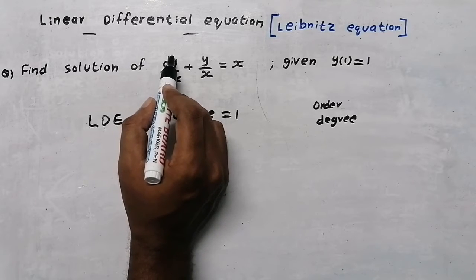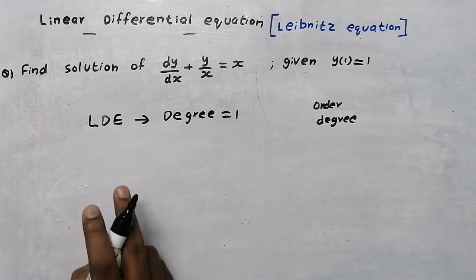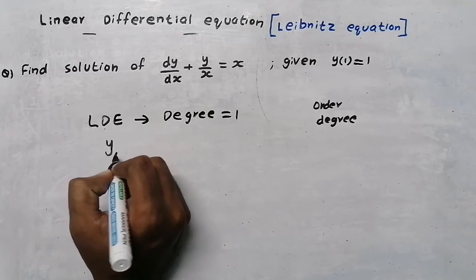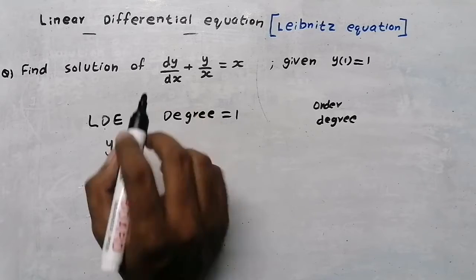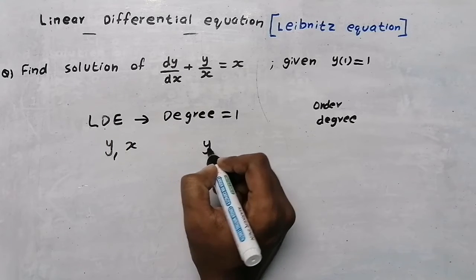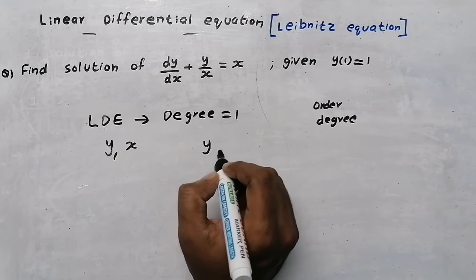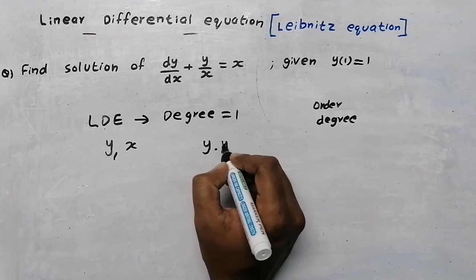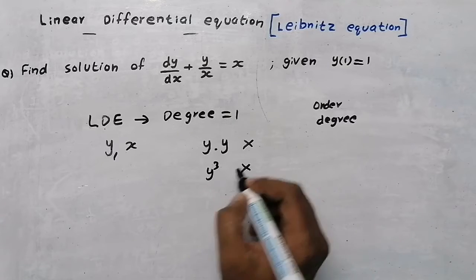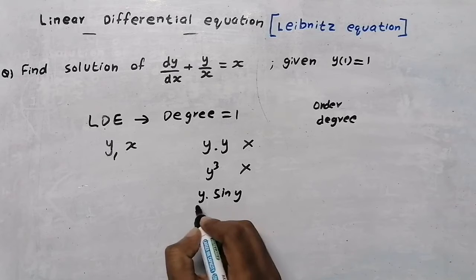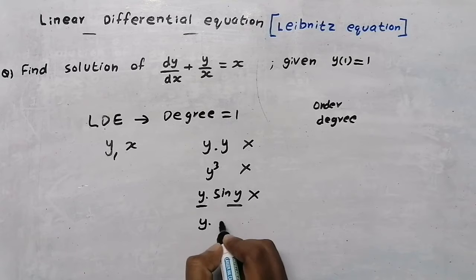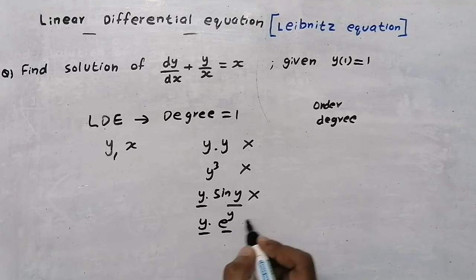The second condition: there are two variables, y and x. Y is the dependent variable and x is the independent variable. The dependent variable y should not appear in a product form — for example, y×y, y³, or y×sin(y) are not allowed since they are all multiplicative forms of the dependent variable.